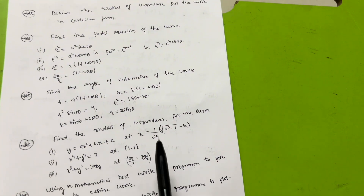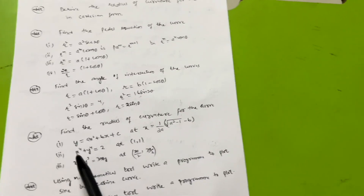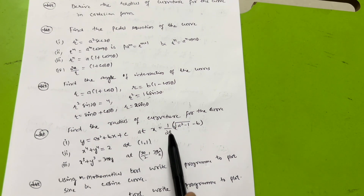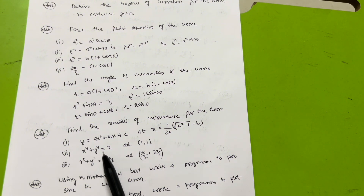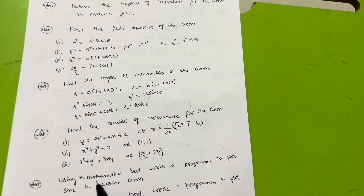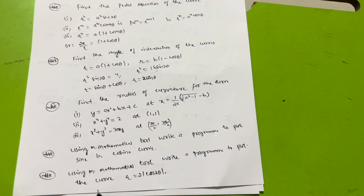Now, for the radius of curvature — again an important topic — for the curve y = ax² + bx + c at x = (1/2a)√(a² − 1) − b; x⁴ + y⁴ = 2 at (1, 1); and x³ + y³ = 3xy at (3a/2, 3a/2). Using a modern mathematical tool, write a program to plot sine and cosine curves, and also write a program to plot r = 2 cos 2θ.